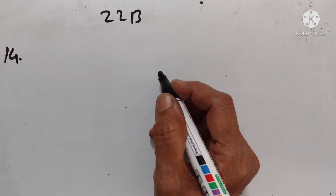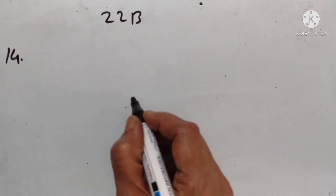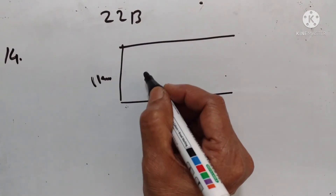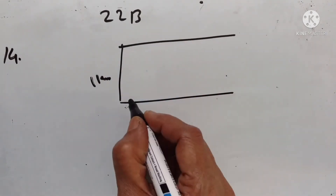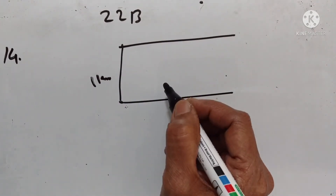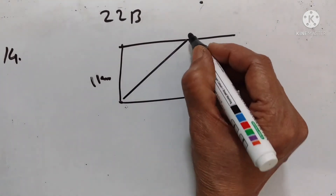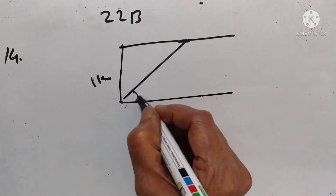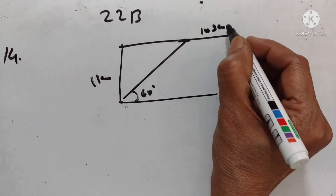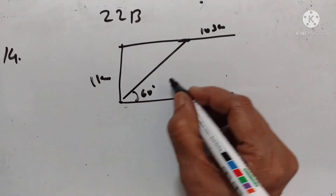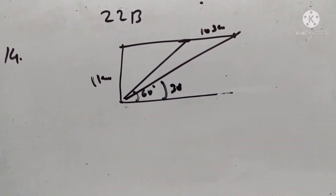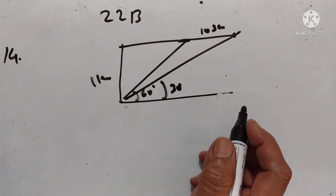4th problem. An aeroplane flying horizontally 1 km above the ground — if this is the ground, 1 km above the ground. Going away from the observer — suppose the observer is here. The aeroplane is going away. The aeroplane is observed at an elevation of 60 degrees. After 10 seconds, its elevation is observed to be 30 degrees. Suppose after 10 seconds it reaches this point, at elevation 30 degrees. Find the uniform speed of the aeroplane in km per hour.